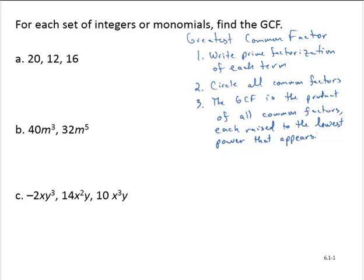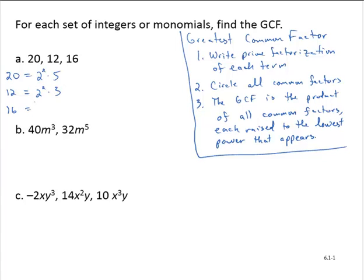So let's take, for example, Exercise A. We're asked to find the GCF of 20, 12, and 16. In prime factorization: 20 is 2 to the second times 5; 12 is 2 to the second times 3; and 16 is 2 to the fourth.